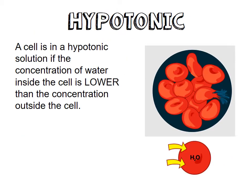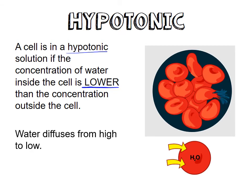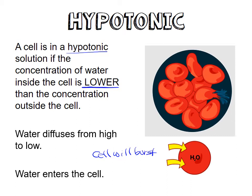The opposite of hypertonic is a hypotonic solution. A cell is in a hypotonic solution if the concentration of water inside the cell is lower than the concentration outside. Because water diffuses from high to low, water is going to go into the cell and the cell is going to burst. The term for this is cytolysis — when your cell explodes — and that is obviously bad.